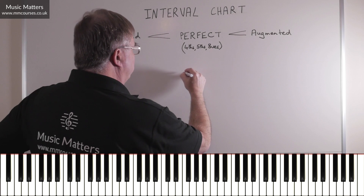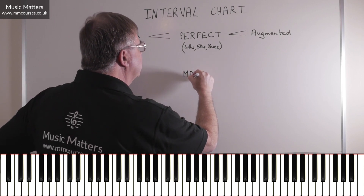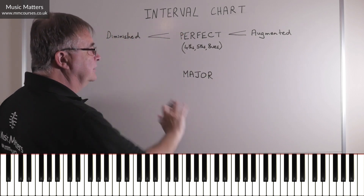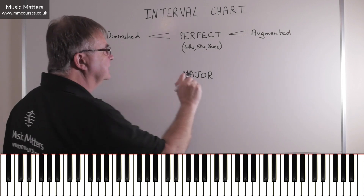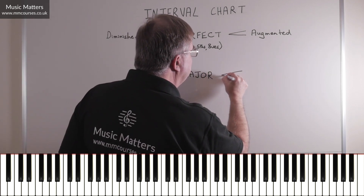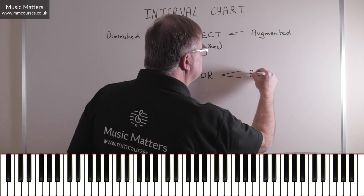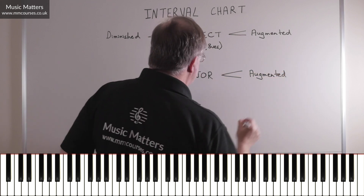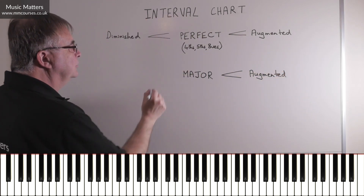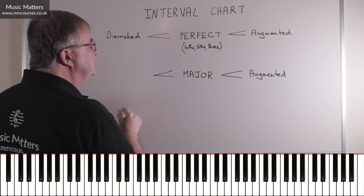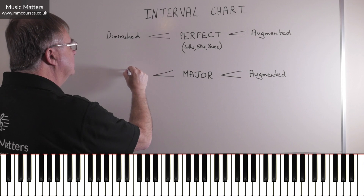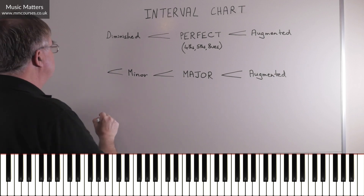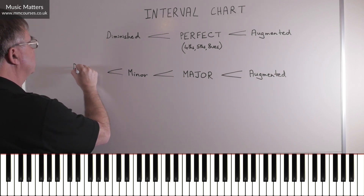The fourths, fifths, and octaves are perfect — everything else is major. So as long as you can remember four, five, eight are perfect and everything else is major, then this table works very nicely. If you make a major interval a semitone bigger, it becomes augmented. If you make a major interval a semitone smaller, it becomes minor. And if you make a minor interval a semitone smaller, then it becomes diminished.